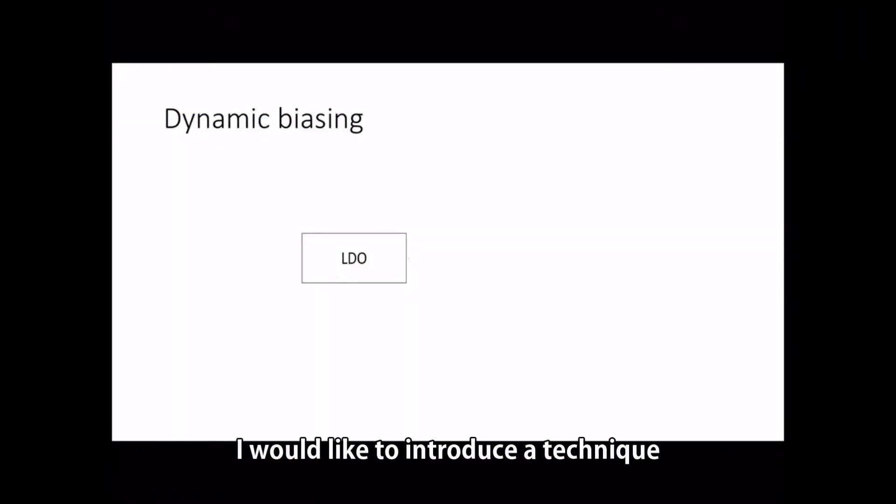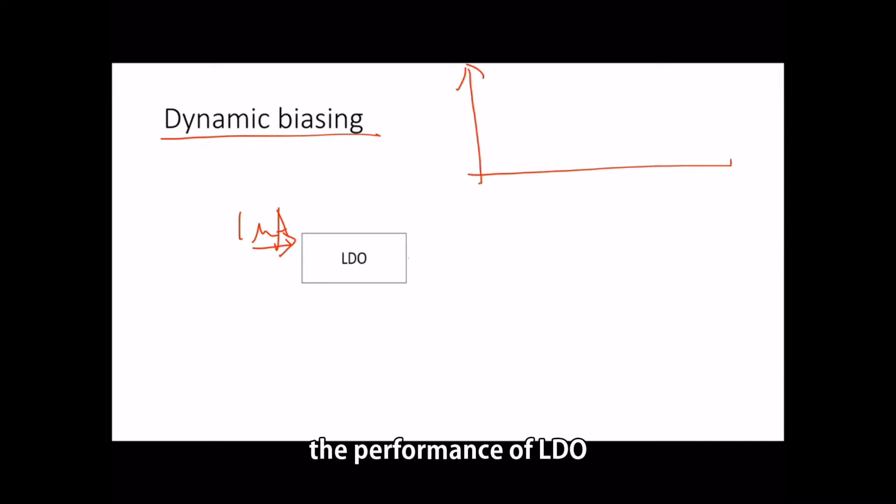I would like to introduce a technique called dynamic biasing. If I inject one microampere to the LDO, the performance of LDO should be intermediate.